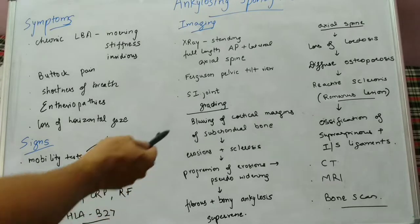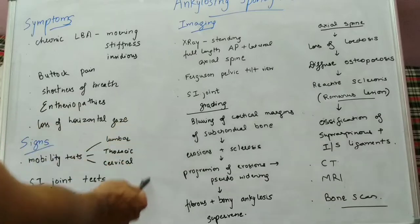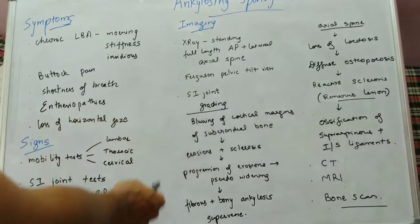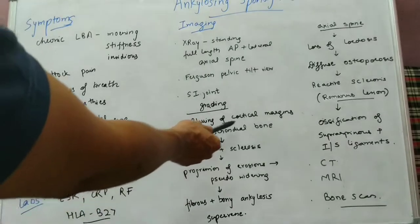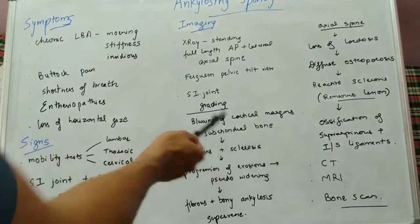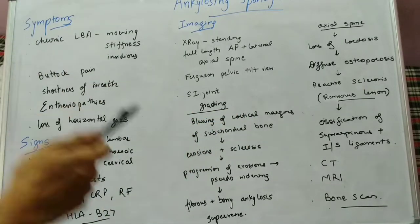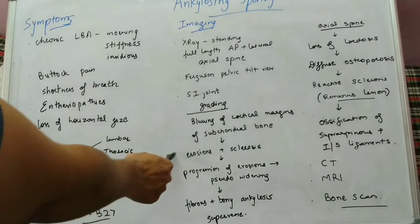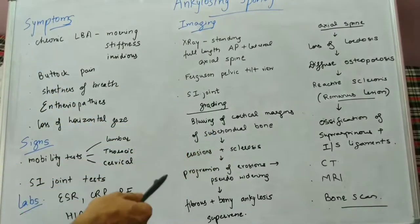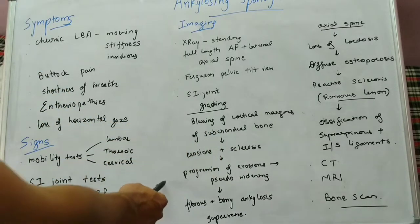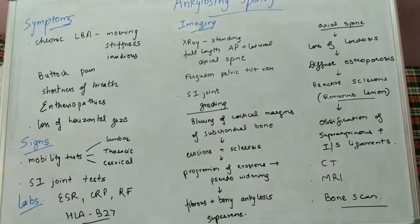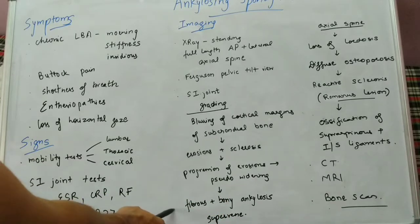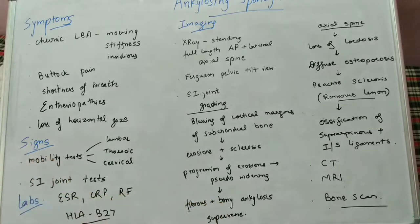We should know about the pathology and sequence of events in the SI joint. To begin with, there will be blurring of the cortical margin of the subchondral bone, followed by erosions and sclerosis. As the erosion progresses, there will be first pseudo-widening of the joint, and at last there will be fibrous and bony ankylosis of the joint.